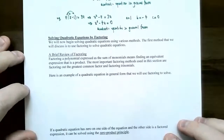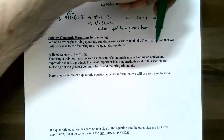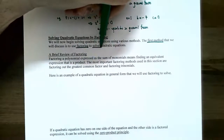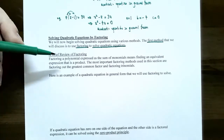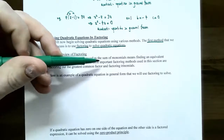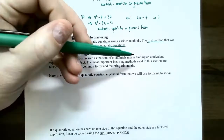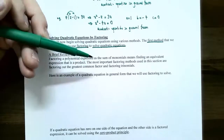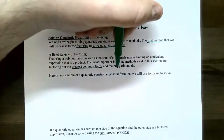We're going to finish this first video by talking about our first method for solving quadratic equations. You can solve quadratic equations using various methods. The first method that uses general form is called factoring. We're going to review factoring so that we can use it to solve quadratic equations. Factoring a polynomial is expressing a sum of monomials as an equivalent product — you take a polynomial and rewrite it as a product of factors. The most important factoring methods in this section are factoring out the greatest common factor and factoring trinomials.